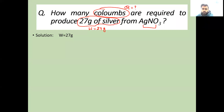How many coulombs are required to produce 27 grams of silver from silver nitrate? In silver nitrate, AgNO₃, the silver balance is 1. We have Ag⁺ and NO₃⁻, and the silver balance is 1.